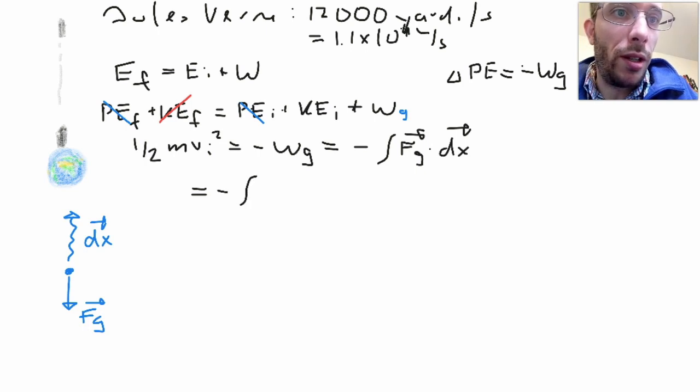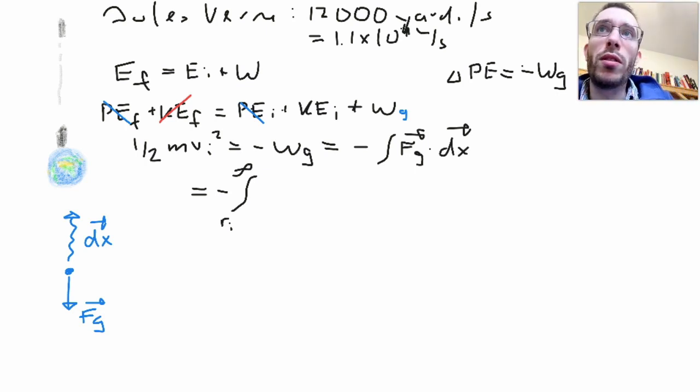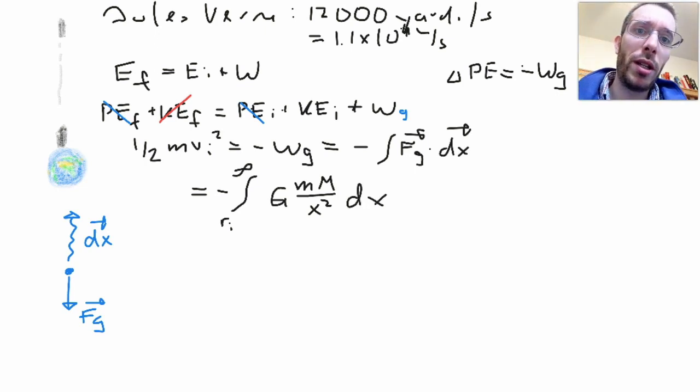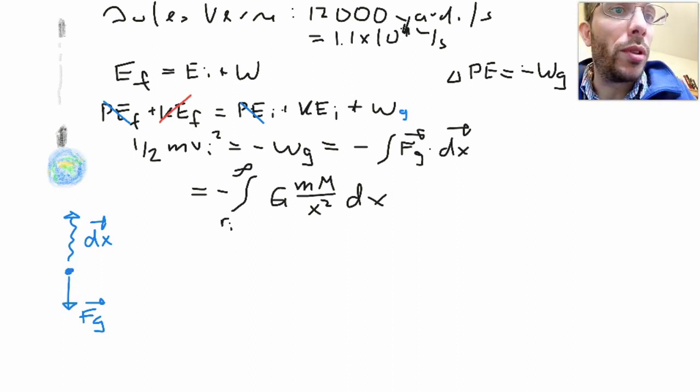This must be equal to minus, and I'm going to be integrating from where I start, from the surface of the planet, so r initial, and I want to go to infinity, and the force of gravity, here we're using Newton's universal law of gravity, so we have capital gravitational constant times mass of the projectile times mass of the planet Earth over the distance squared, and now dx, and if I look at my free body diagram, dx and Fg is pointing in opposite directions, so I have a cosine of 180, so I'm going to put a minus here.